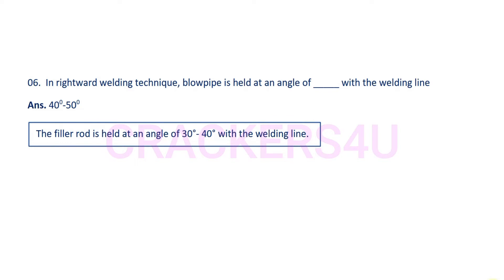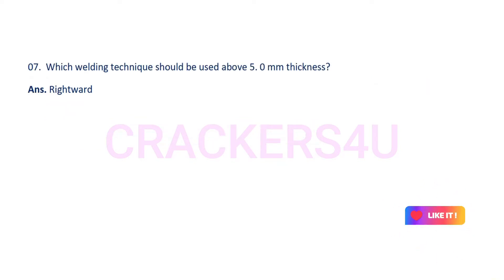Question number six: In the rightward welding technique, the blow pipe is held at an angle of 40 to 50 degrees with the welding line, and the filler rod is held at an angle of 30 to 40 degrees with the welding line.